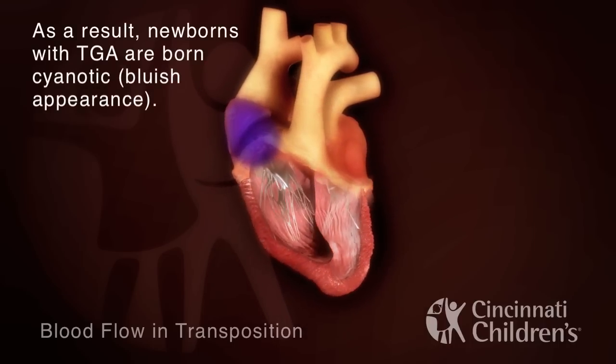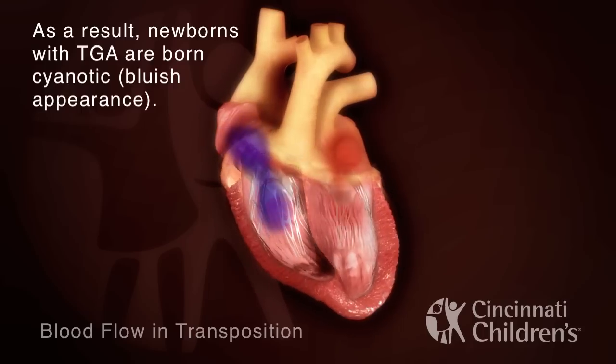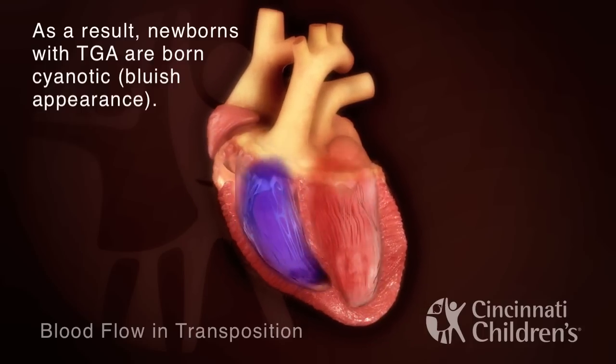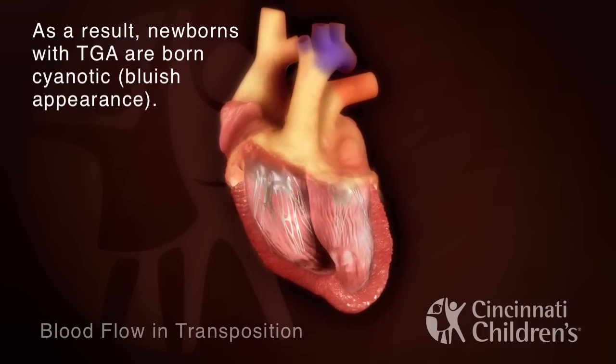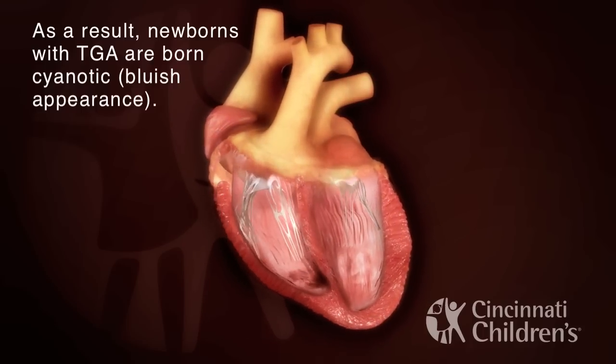As a result, newborns with TGA are born with a bluish appearance, known as cyanosis.